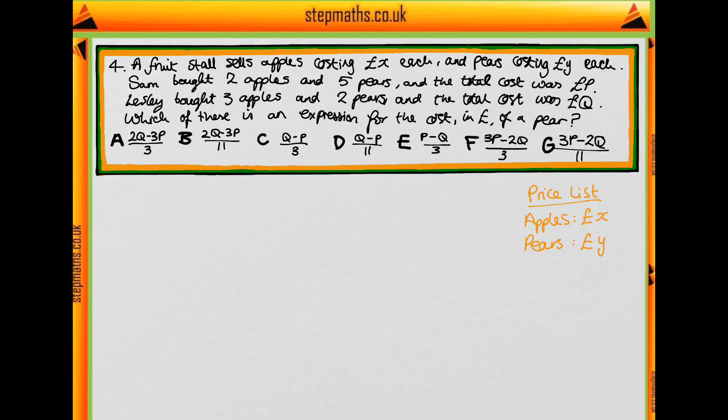So let's start with Sam. He bought two apples, so 2X and five pears, 5Y, and it cost him P pounds. So let's do the same for Leslie. She bought three apples and two pears and it cost her Q pounds.